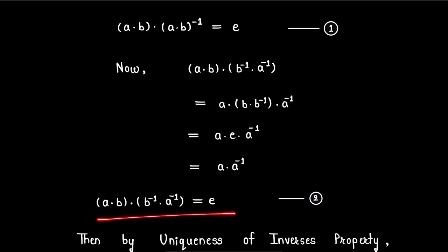We are going to call this expression as 2. Then from 1 and from 2 we can observe that (a·b)^(-1) is inverse of element a·b and also b^(-1)·a^(-1) is inverse of element a·b in group G.